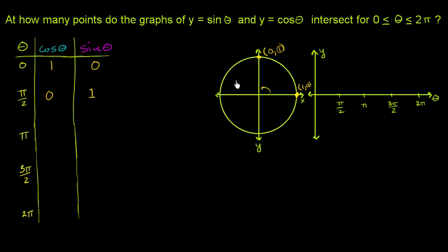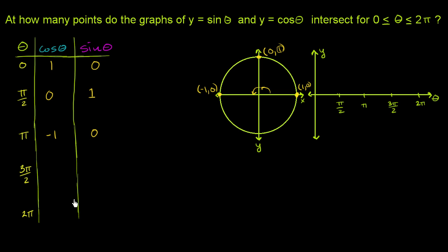Now let's go all the way to theta equals pi. We're at this point on the unit circle with coordinate (-1, 0). So cosine of theta is -1, which is the x-coordinate, and sine of theta is 0, the y-coordinate.